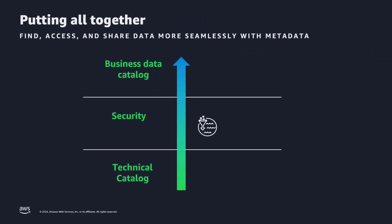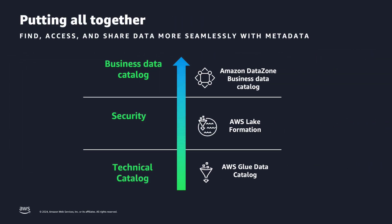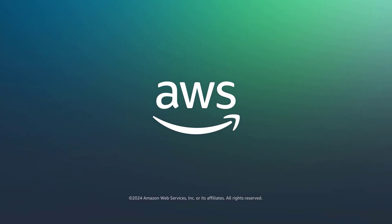Just to summarize, going from bottom to top: we have, as our technical catalog, the AWS Glue Data Catalog. In the middle layer — the security layer — AWS Lake Formation. And as our business data catalog, we have Amazon DataZone Business Data Catalog. This is all for today. Thank you for joining.